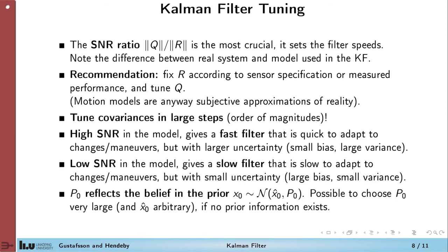So the important thing for the filter is the ratio Q over R. It tells how fast the filter adapts to changes. The recommendation is to fix R according to sensor specification and what we have measured. It's usually quite easy to derive the uncertainty of the measurements, whereas the Q can be treated as a tuning parameter. The motion model is in most cases, anyhow, quite uncertain.